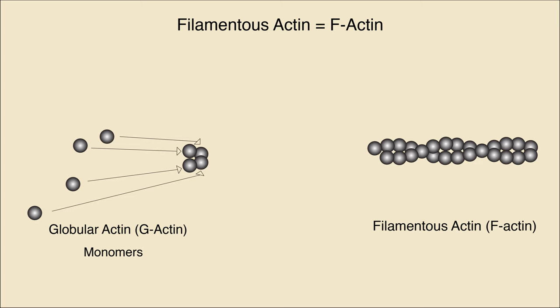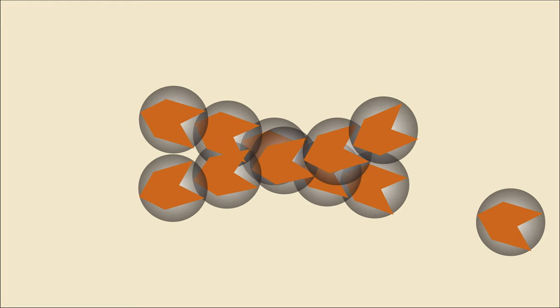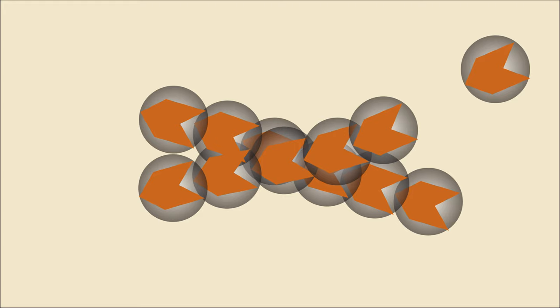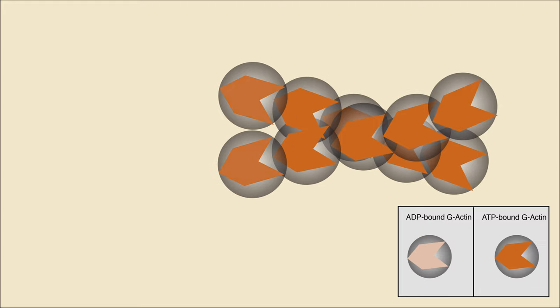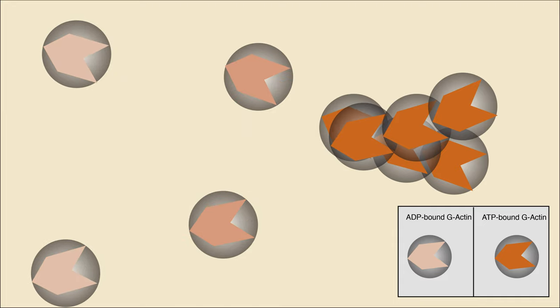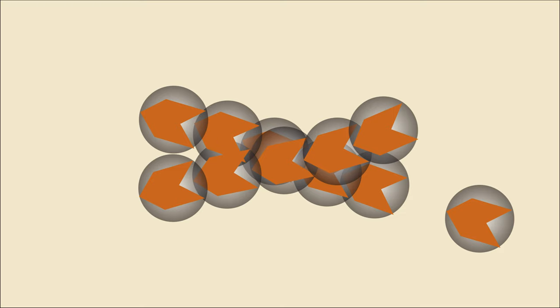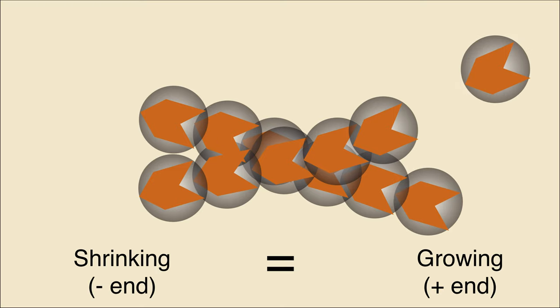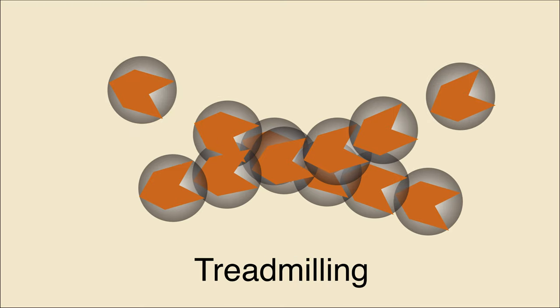F-actin is composed of G-actin monomers that assemble first into tetramers in a rate-limiting step called nucleation. ATP-bound G-actins can then bind the plus end to lengthen the filament. When ATP bound to G-actins at the minus end is hydrolyzed, the monomers disassemble, causing the filament to shorten. Actin maintains a constant length when assembly and disassembly occur at the same rate, in a state called treadmilling.